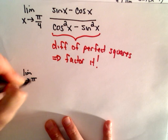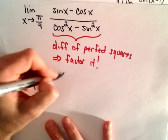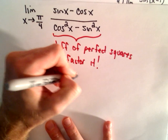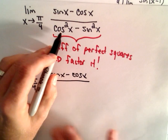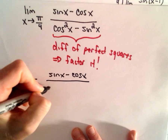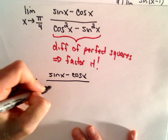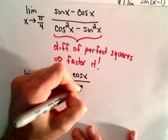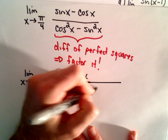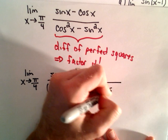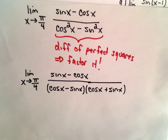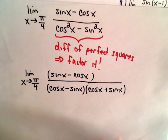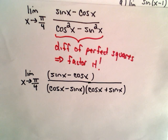So we have the limit as x approaches pi/4, with the numerator left alone, and the denominator factored as cosine(2x) = cosine²x minus sine²x = (cosine x minus sine x)(cosine x plus sine x). My goal is to get a common factor in numerator and denominator to cancel out.